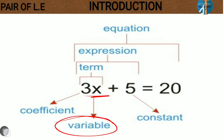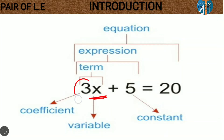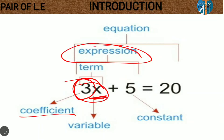The number multiplied to the variable — here 3 is the constant before x — is also called the coefficient. So to summarize: we have constants, variables, terms, and expressions. The combination of constant and variable with multiplication is a term; two terms combined with addition or subtraction form an expression; and the number multiplied to the variable is the coefficient. All together we are calling it as an equation.